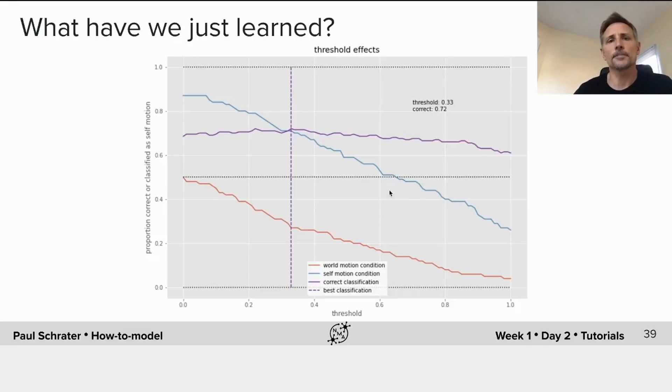What did we just learn? What we saw is that the noisy self-motion signal could be processed in a way that we could detect the presence of motion when it was there and distinguish it from when there was no motion, but that it wasn't perfectly reliable. The best overall performance that we could achieve when we take into account both kinds of errors is 72% correct, and that's shown in this purple line.